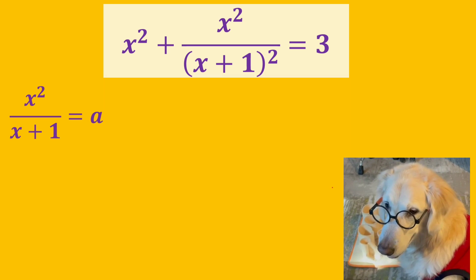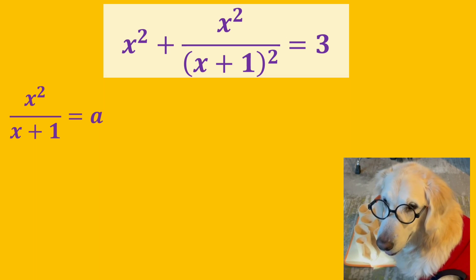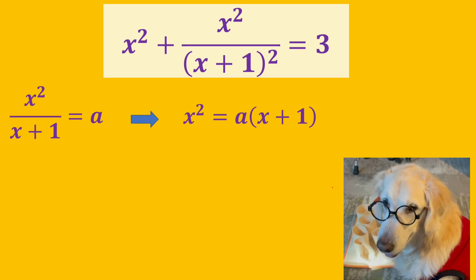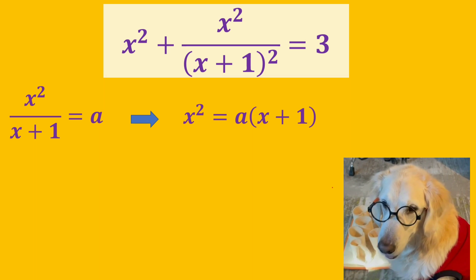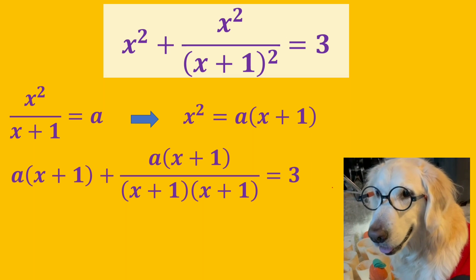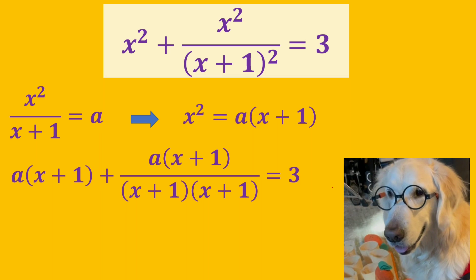Let's equate x squared over x plus 1 to a. So x squared is equal to a times x plus 1. We will substitute x squared with a times x plus 1.